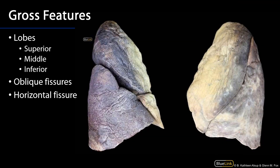Here is a lateral view of the lungs that allows us to see the various lobes and fissures of the lungs. On the right side we have three lobes: a superior lobe, a middle lobe, and an inferior lobe.